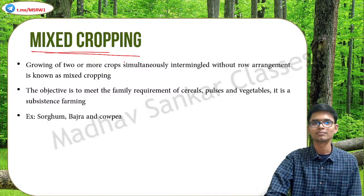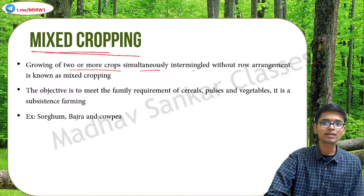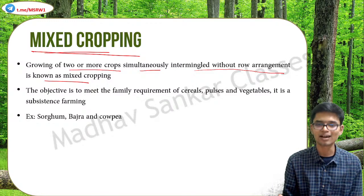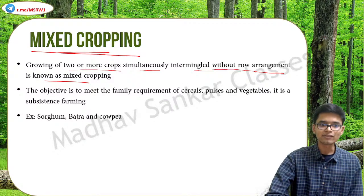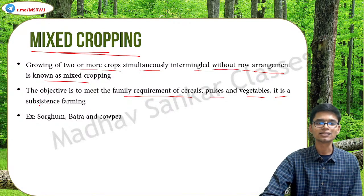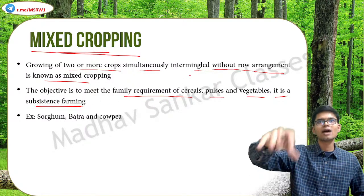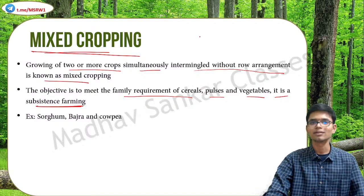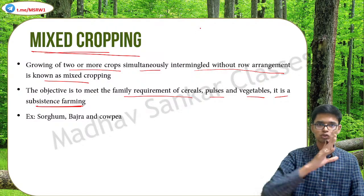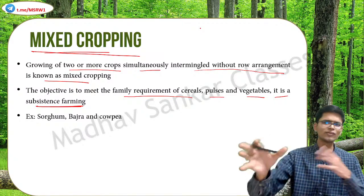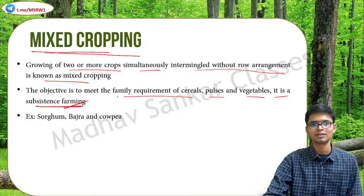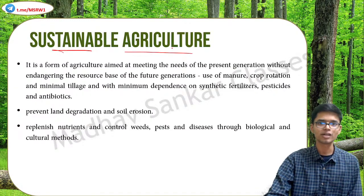Mixed cropping means growing two or more crops simultaneously intermingled without any row arrangement. If there is row arrangement it is intercropping; without specific arrangement it is mixed cropping. The objective is to meet family requirements of cereals, pulses, vegetables, etc. — it is basically subsistence farming. If you have a small plot of land, say 10 cents, and are growing 10 different crops, you do not have enough space to arrange them in any particular order, so you plant wherever space is available. Examples include sorghum, bajra, and cowpea.